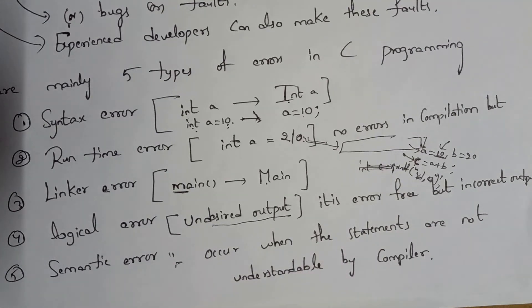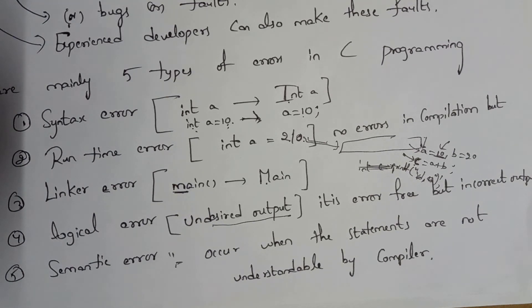The last type is a semantic error. If the statements written in a C program are not understandable by the compiler, it is considered a semantic error. These are the five types of errors in C programming.